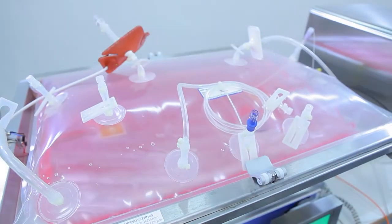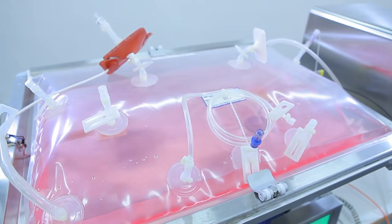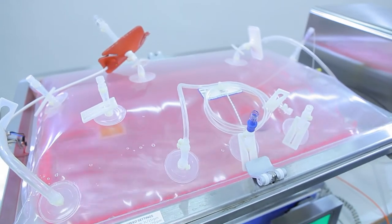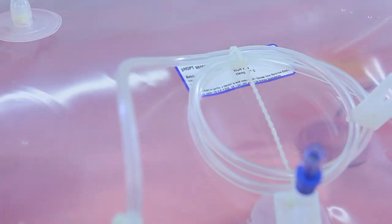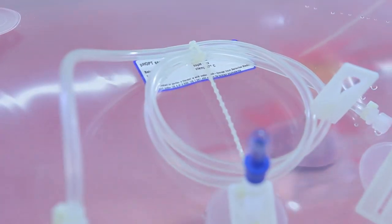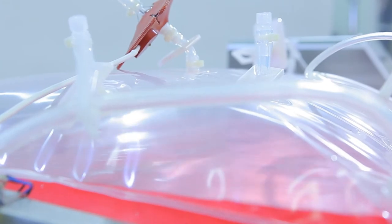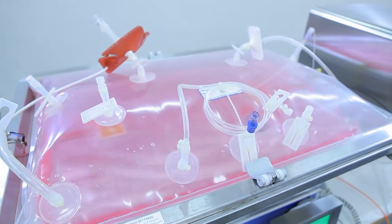Allow the cell bag bioreactor to equilibrate. During equilibration, the medium reaches the operating temperature and pH. The cell bag bioreactor reaches the correct pressure and gas composition, and the carbon dioxide concentration in the headspace. And the medium is equilibrated.